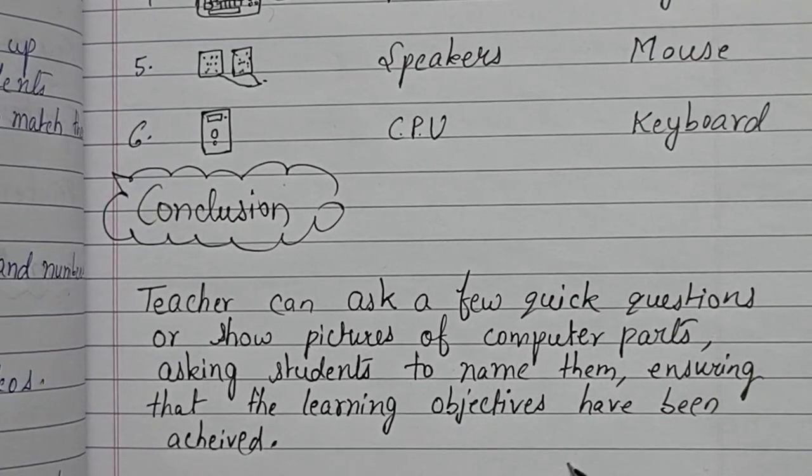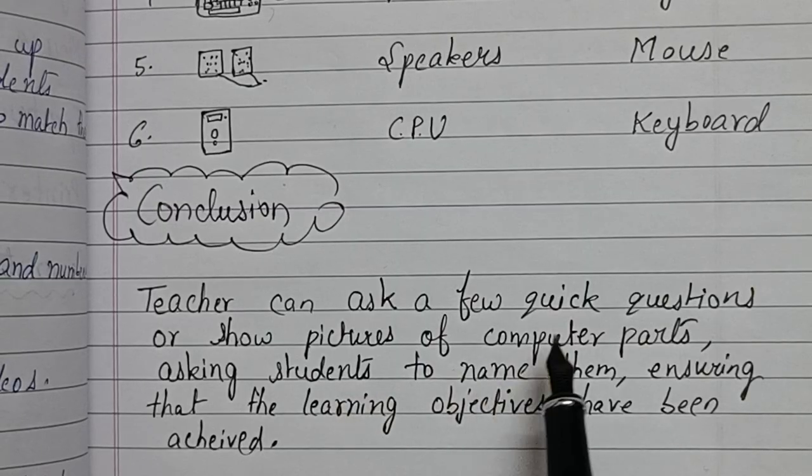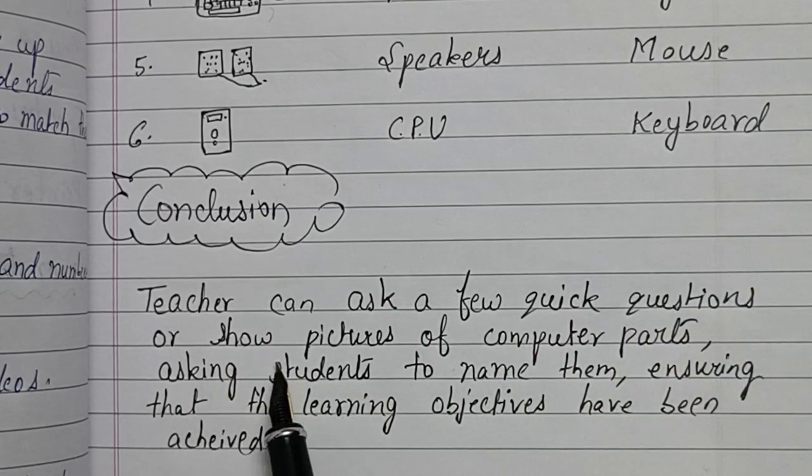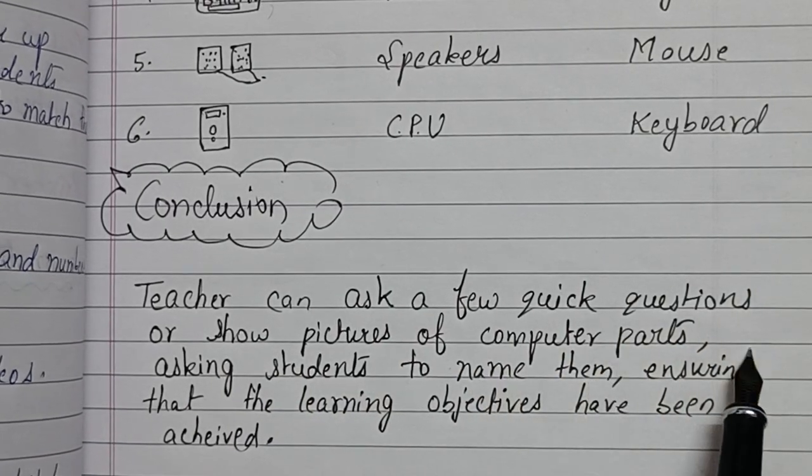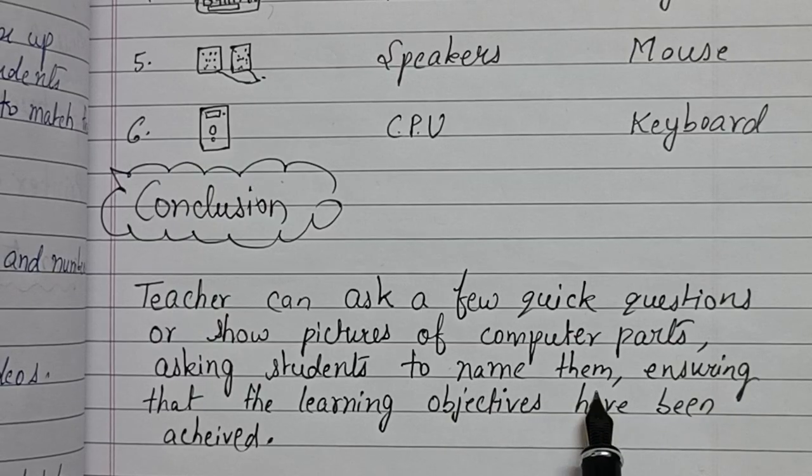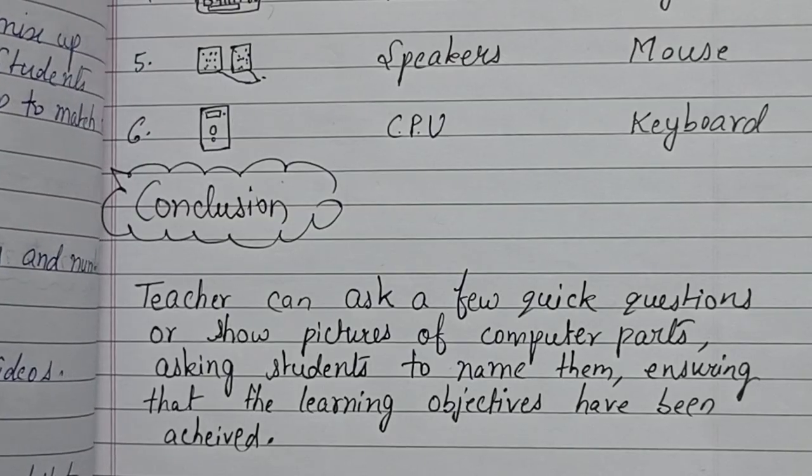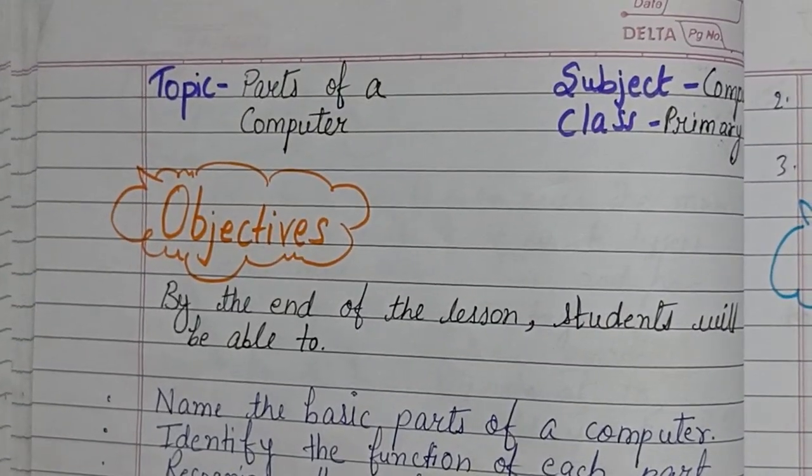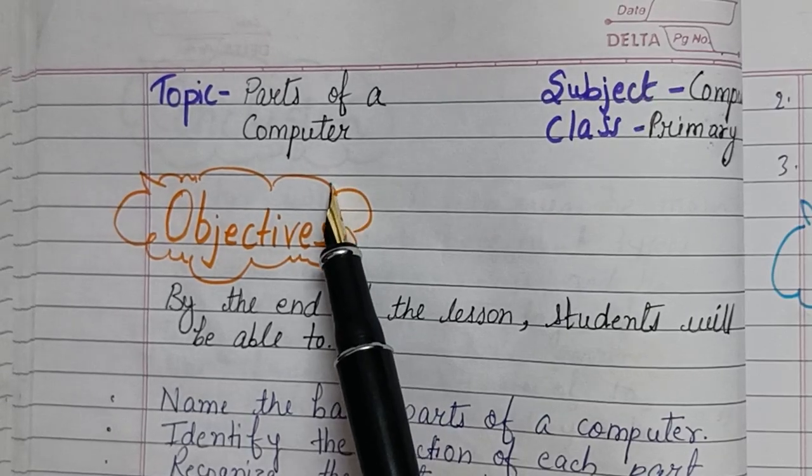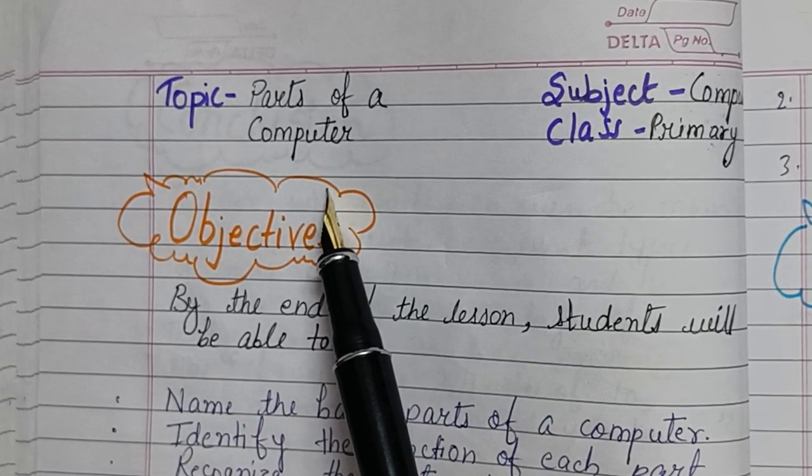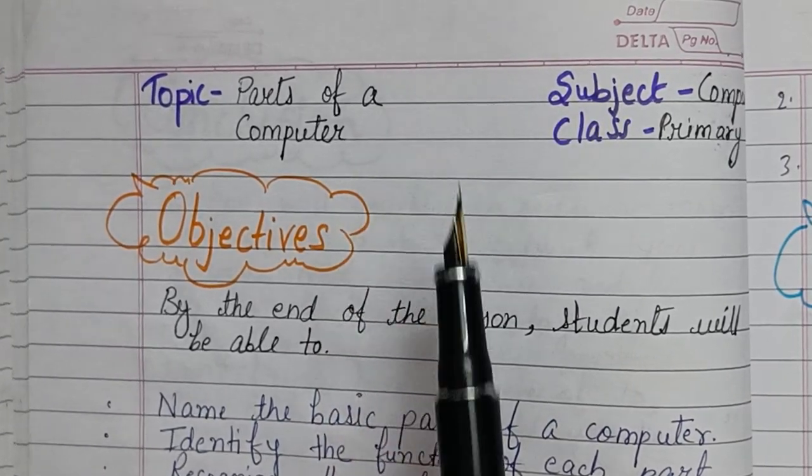Now conclusion: teacher can ask a few quick questions or show pictures of computer parts, asking students to name them, ensuring that the learning objectives have been achieved. I hope you like my lesson plan of parts of a computer for primary class. Subject is computer. Thank you.